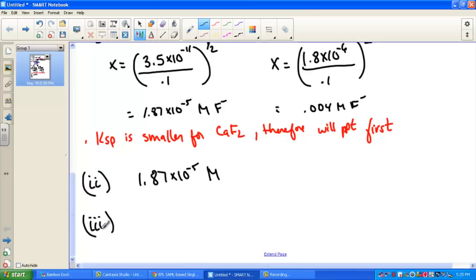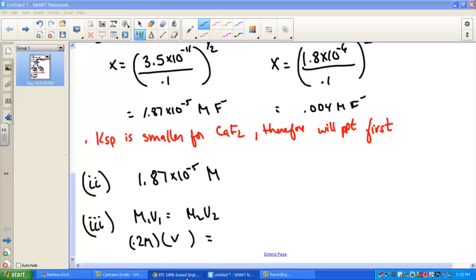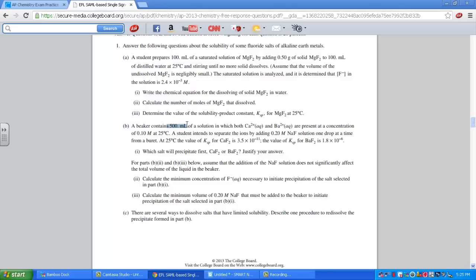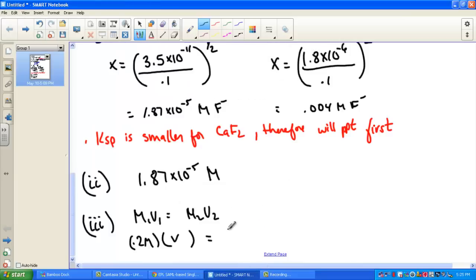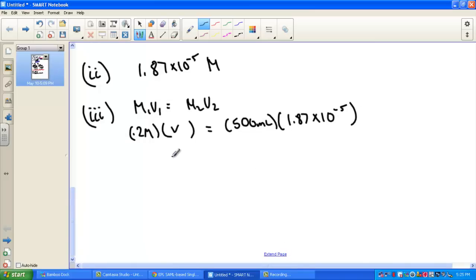It also asks us to calculate the minimum volume of 0.2 molar sodium fluoride. Its concentration is 0.2, we'd like to know how much we have to add. The beaker initially had 500 mL, so that's the new volume we're adding this to. The minimum molarity, we just calculated, is 1.87 times 10 to the negative 5th molar. So MV equals MV, a dilution problem. 500 times 1.87 e-5 divided by 0.2, and the volume comes out to be 0.047 mL.